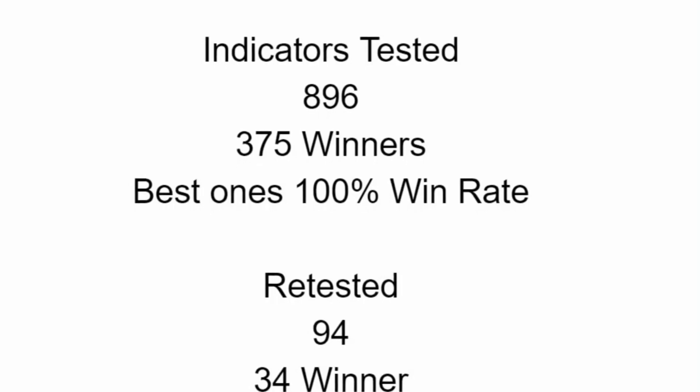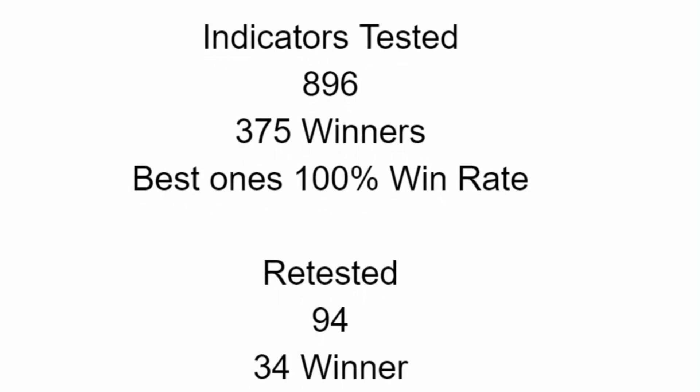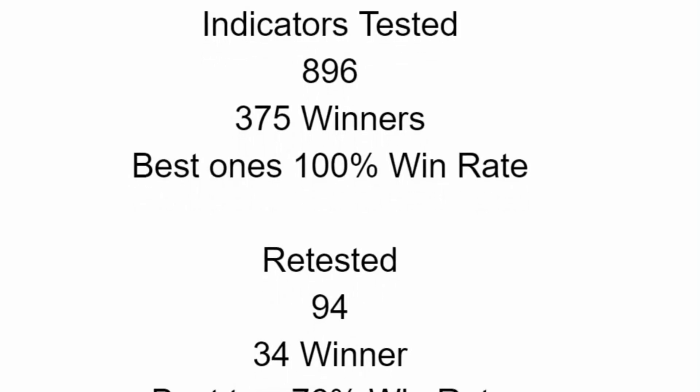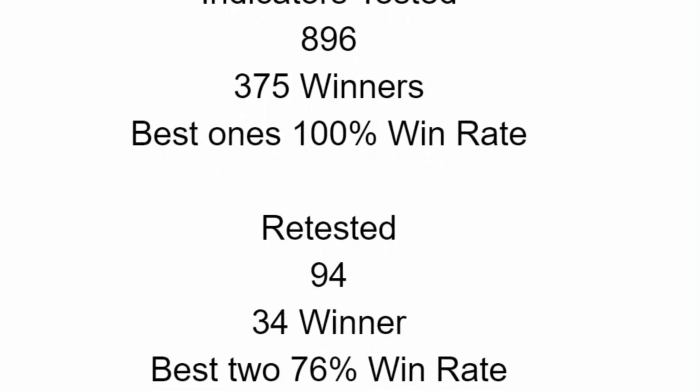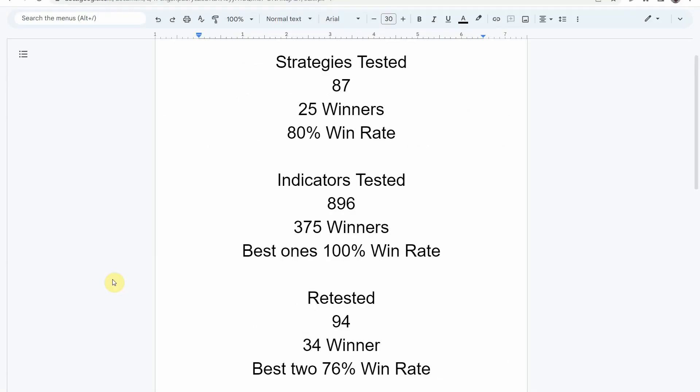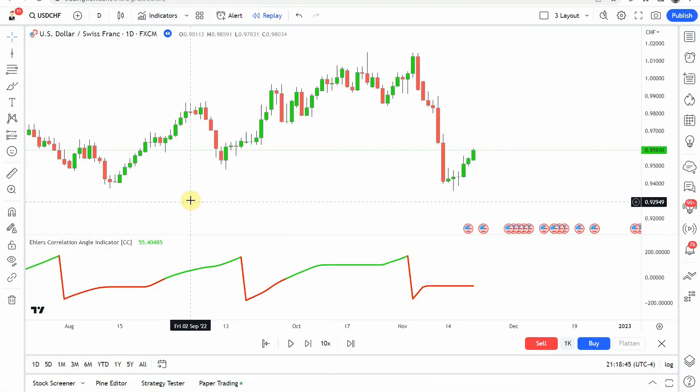We have also retested in the advanced testing 94 of the winning indicators. 34 of them have been able to maintain their winning status, with the best two achieving a 76% win rate. If you are interested in a full list of these indicators and strategies along with their win rates, we've compiled all that information into spreadsheets, which you will get when you become a patron. Keep in mind that we test most of these on the forex and crypto market, but they can be applied to just about any market and time frame universally.